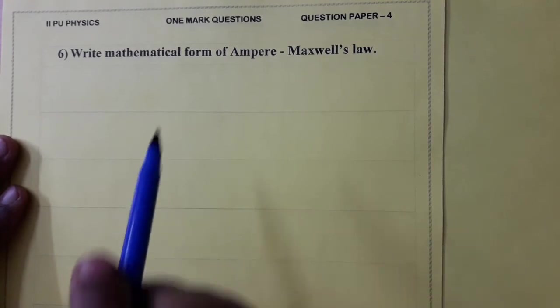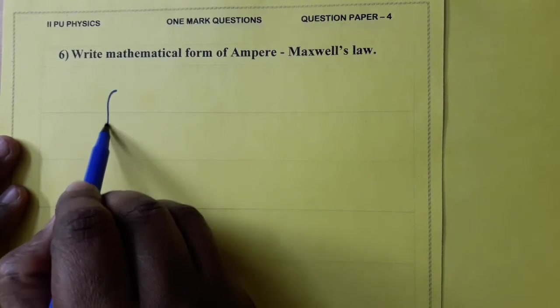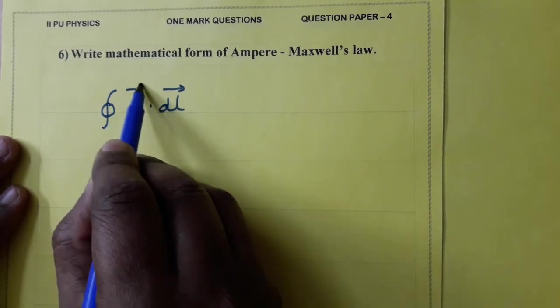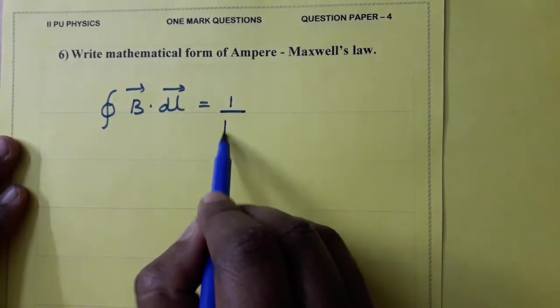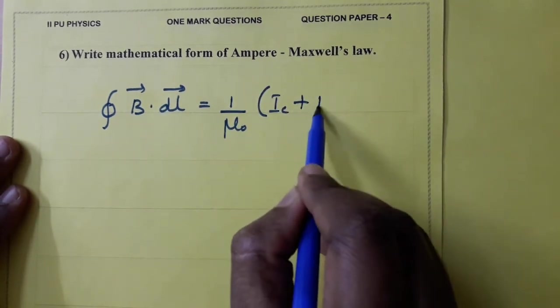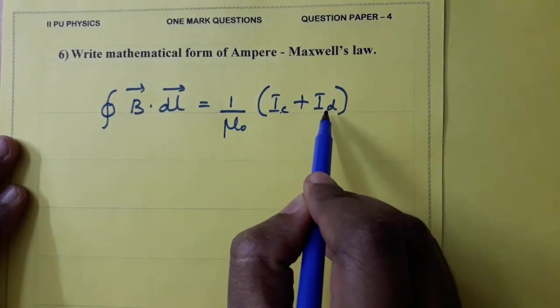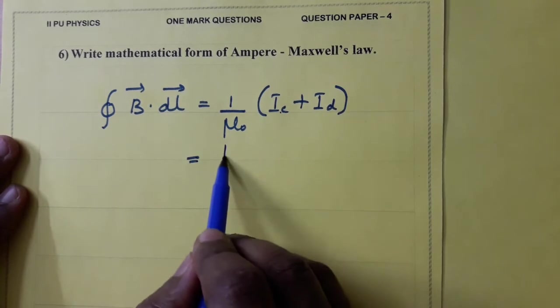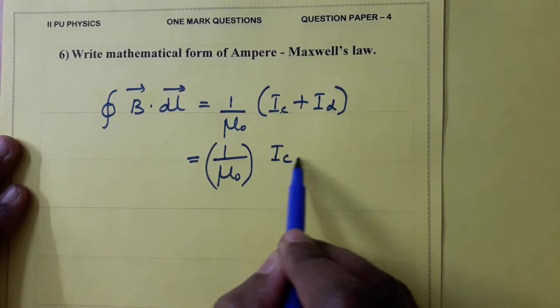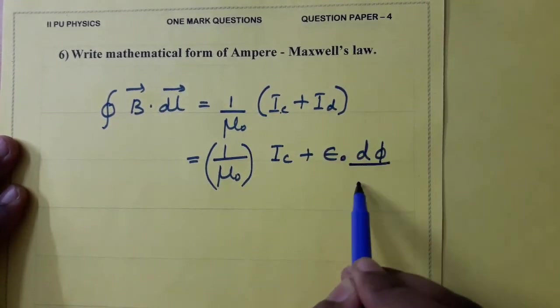Write the mathematical form of Ampere-Maxwell's law. It is the line integral of magnetic field equal to 1 by mu naught times I c plus I d where I c is conduction current, I d is displacement current.